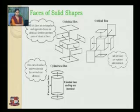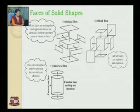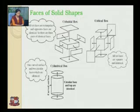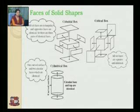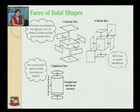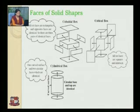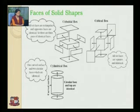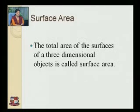Now, let's observe the faces of solid shapes. In a cuboidal box, all 6 faces are rectangles and opposite faces are identical, giving 3 pairs of identical faces. In a cubical box, all 6 faces are square and identical. In a cylindrical box, there is 1 curved surface and 2 circular surfaces, which are identical.